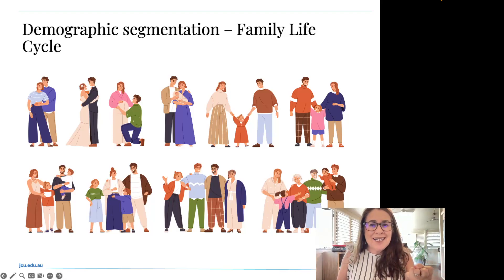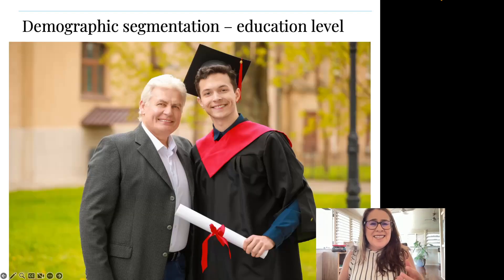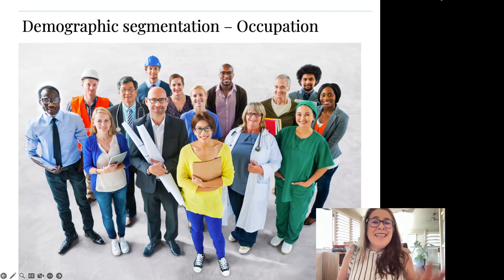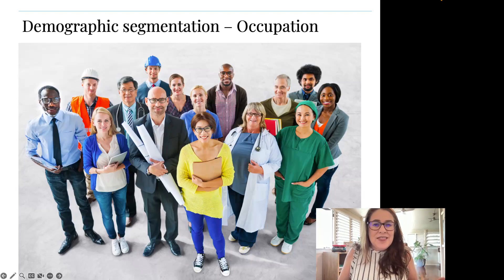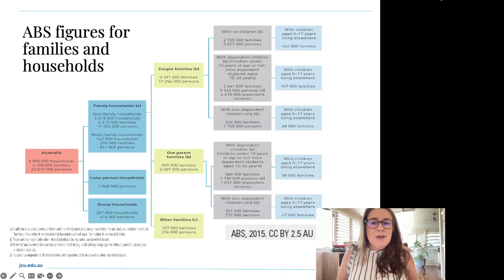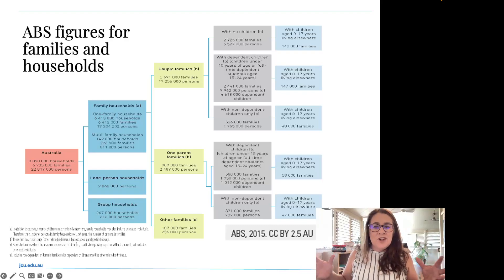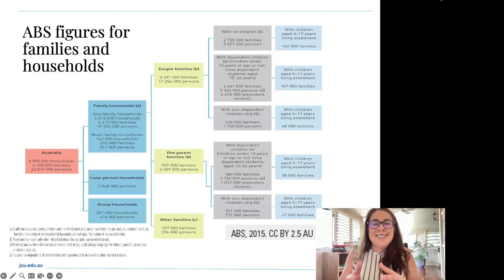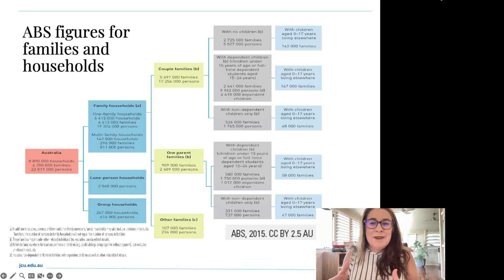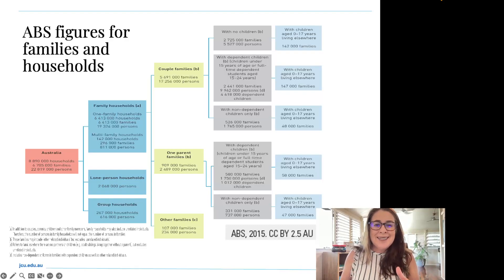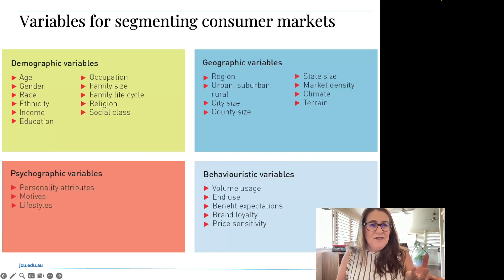We also consider what stage of life people are at — their family life cycle — in our marketing segmentation. We may also consider education level and occupation, because people with different occupations are more interested in different things. The Australian Bureau of Statistics (ABS) is Australia's national statistical agency, providing trusted official statistics on economic, social, population and environmental matters through census data collected every four years. This is a highly valuable source for marketers and decision makers.